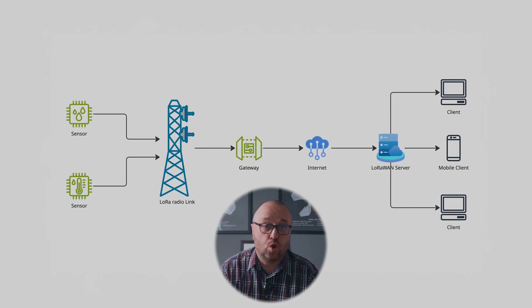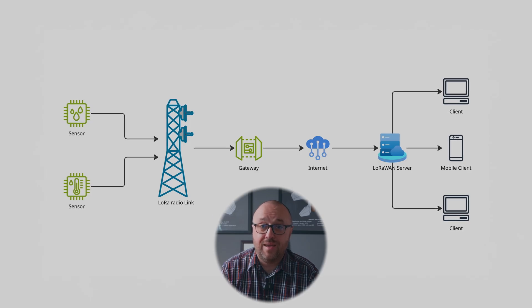LoRaWAN also includes strong security with AES encryption. It defines device classes: Class A for minimal power use, Class B for scheduled listening, and Class C for continuous listening. It ensures compliance with regional duty cycle regulations. Altogether, LoRaWAN enables scalable, secure, and efficient Internet of Things networks built on LoRa modulation.